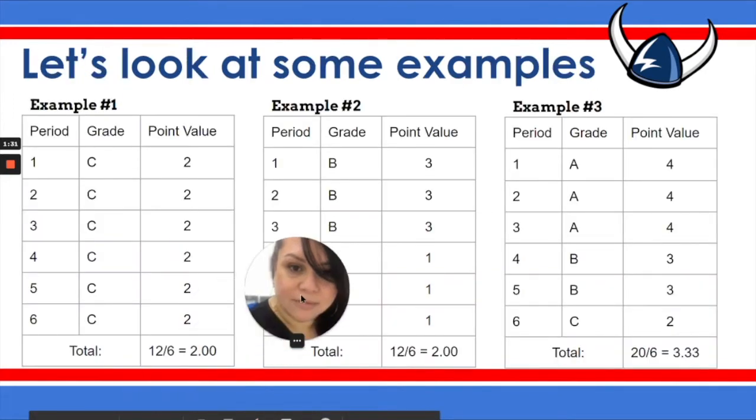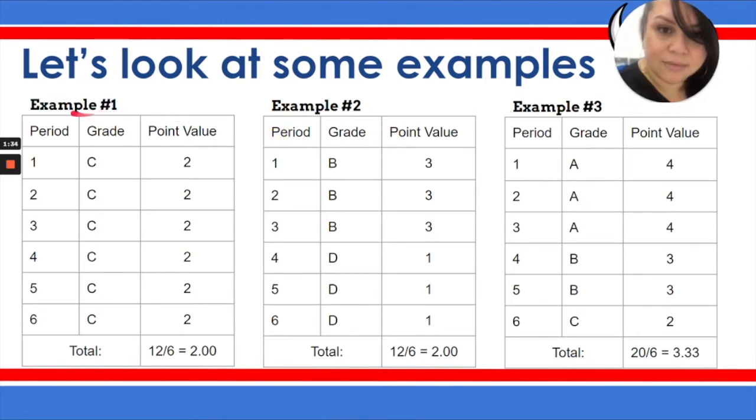Let's look at some examples. In this first example, this student earned all C grades. And as I mentioned, a 2.0 is an average of C grades. This is highlighted here for you in this example.